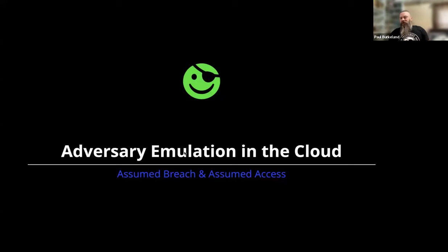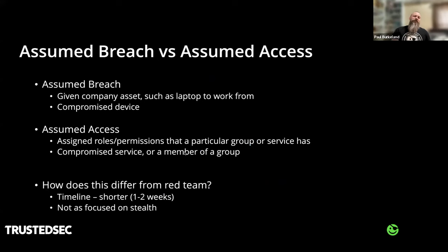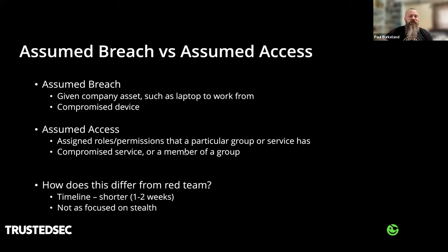Another area is adversary emulation in the cloud — acting like the attackers do. We have two main methods: assumed breach and assumed access. In our vernacular, assumed breach is when we're given a company asset like a laptop, and we test from that perspective — what remote workers might have. You can also detonate a C2 on a box to emulate that. Assumed access is where we test with a particular role, service, or as a member of a group. These are shorter than red teams — we're not always trying to be stealthy, especially if social engineering is involved.